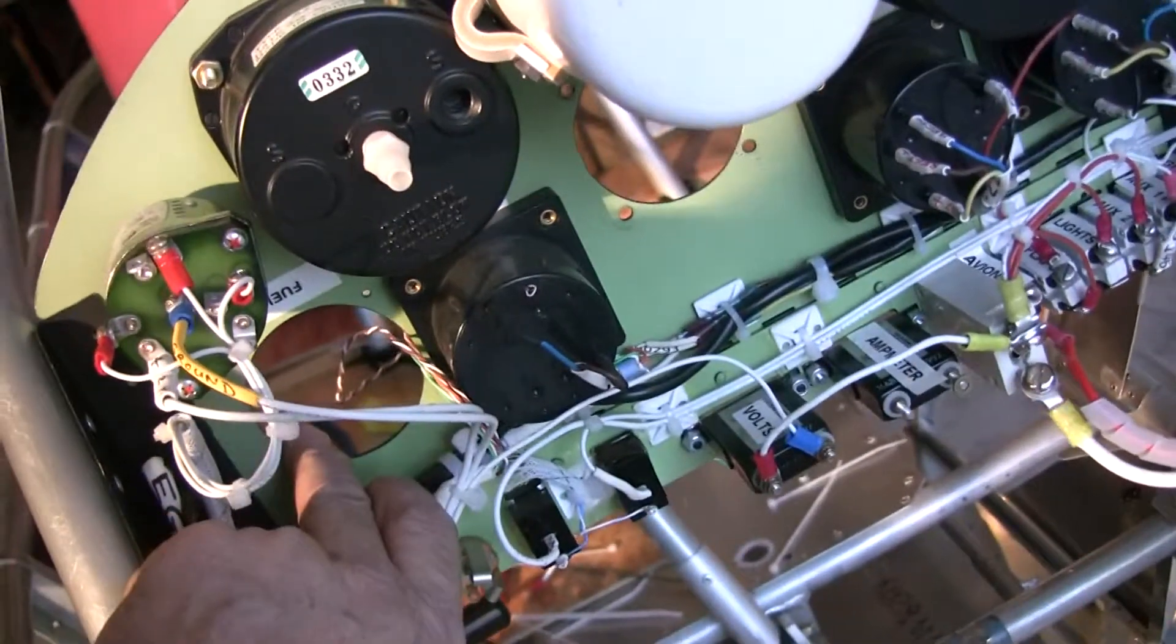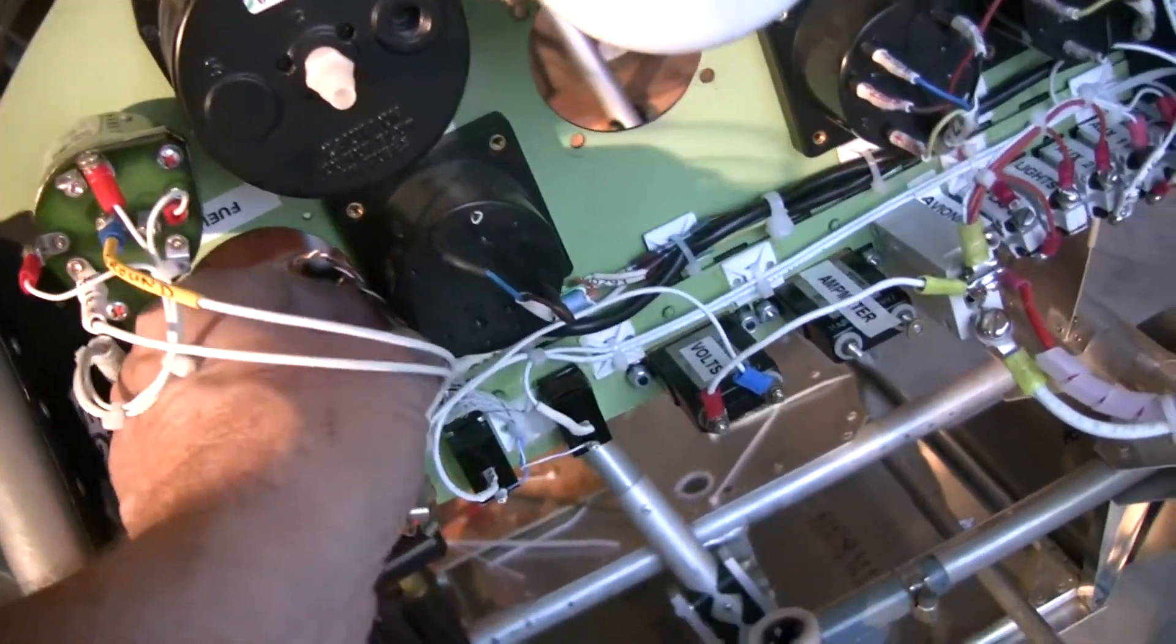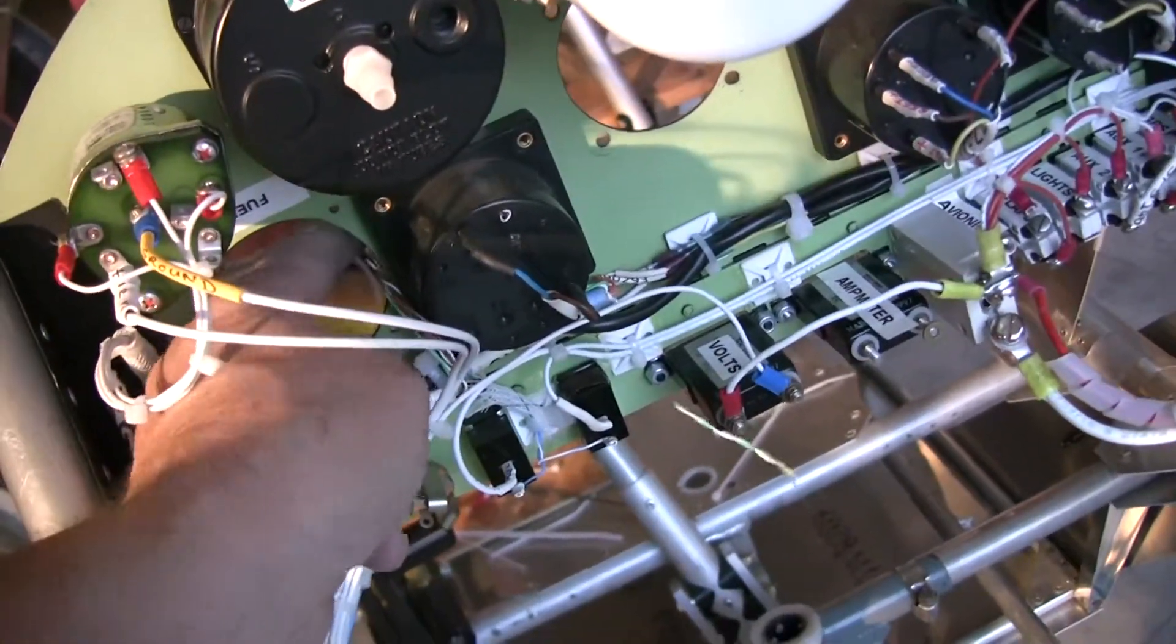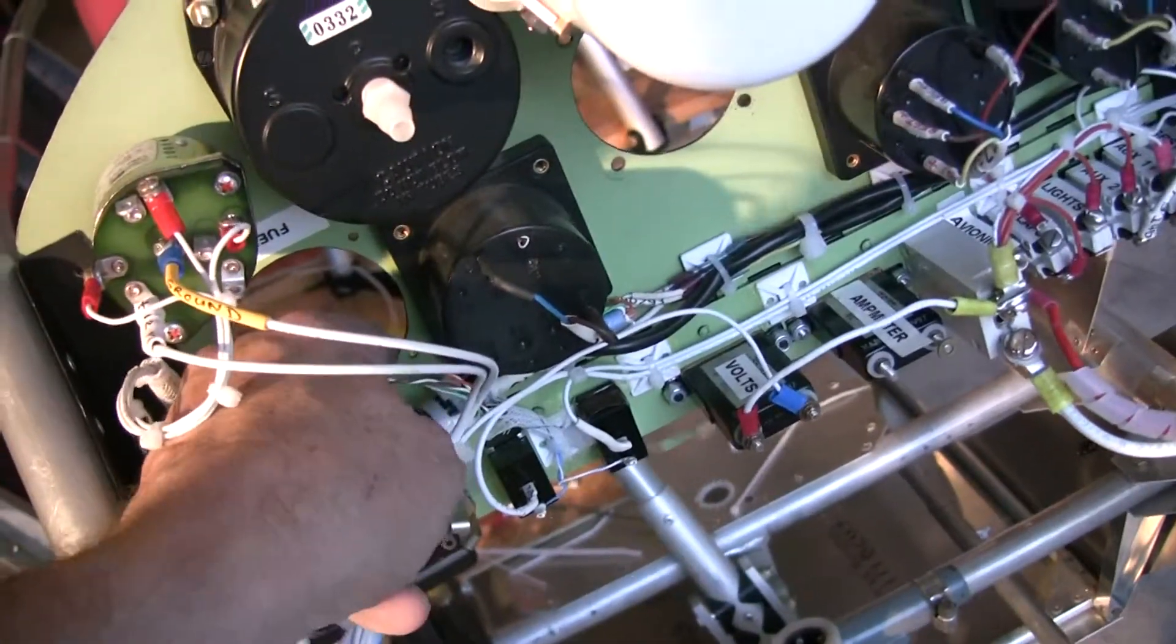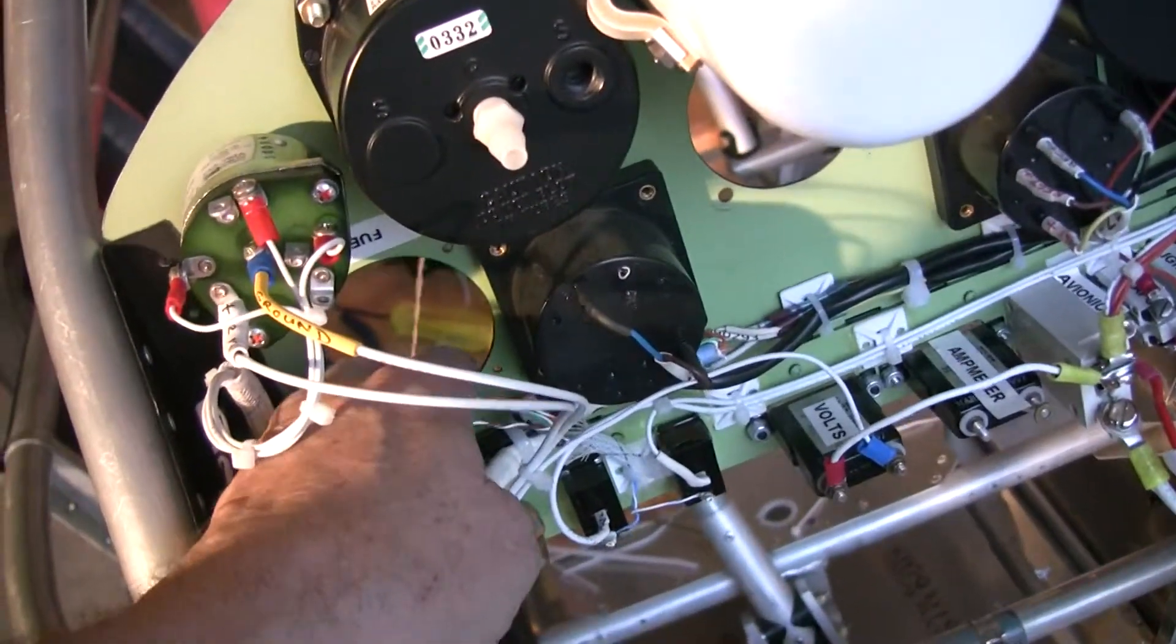Following down this hole is where the fuel gauge will go, and here are the wires for the fuel senders, for the gauge senders out of the fuel tanks.